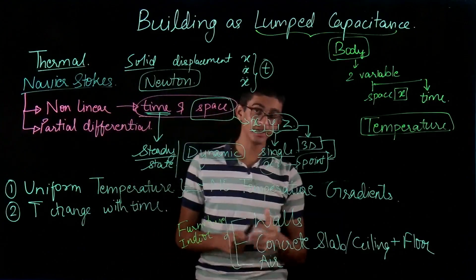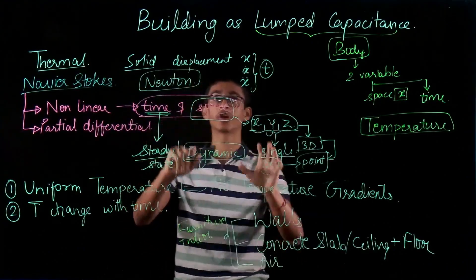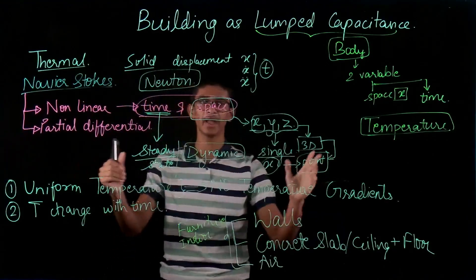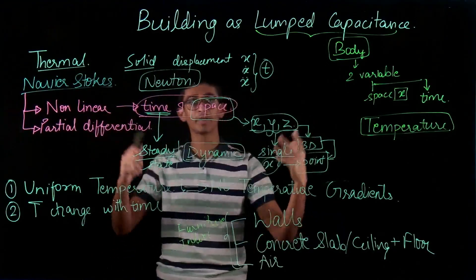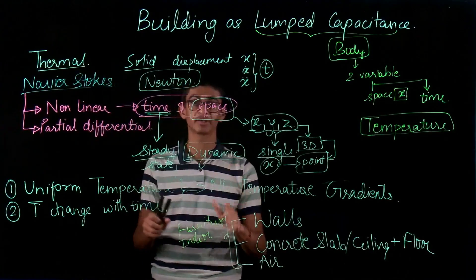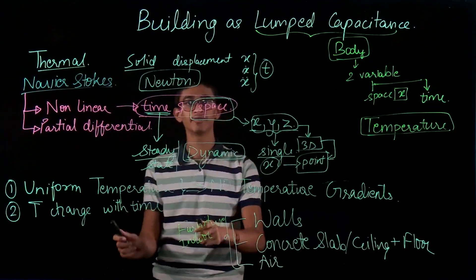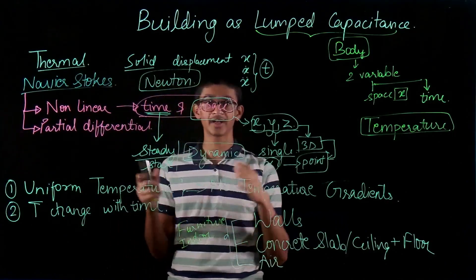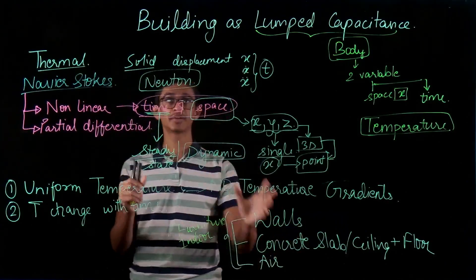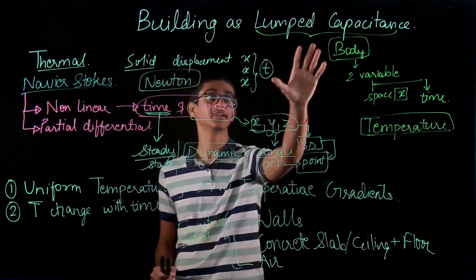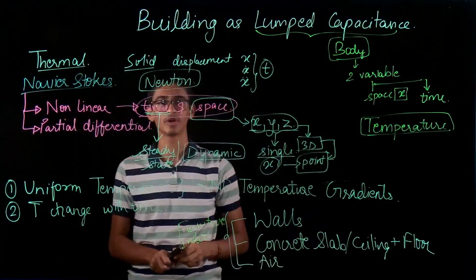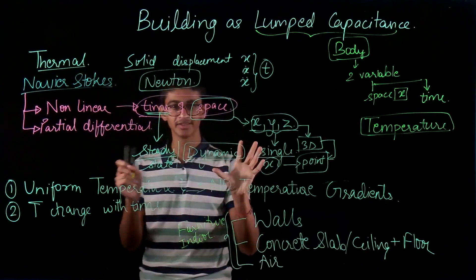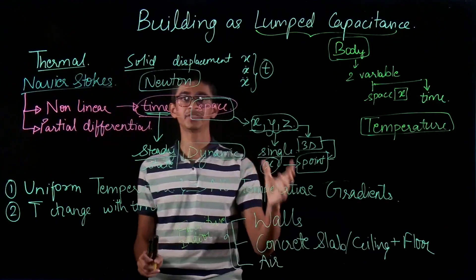So in the next we'll continue with the requirements, the formal technical requirements to consider building as a lump capacitance. We can't take any building and just apply the lump capacitance model. There are some requirements. If the building fulfills those requirements (there are multi-material requirements and size requirements), then we can consider building as a lump capacitance and easily solve some very complex problems and get estimates about the temperature changes inside and of my building with time.